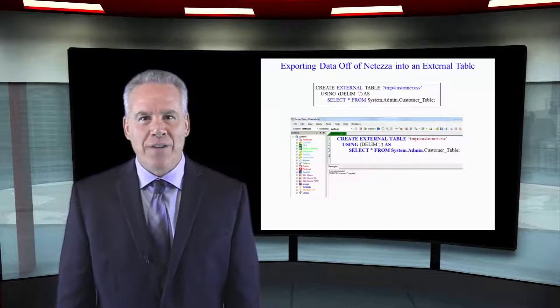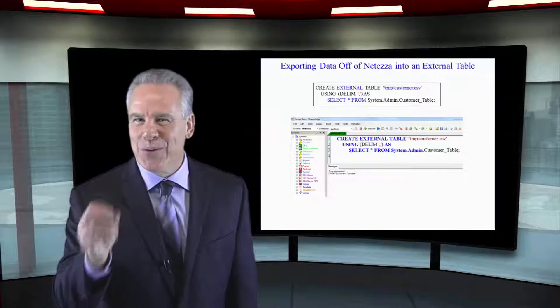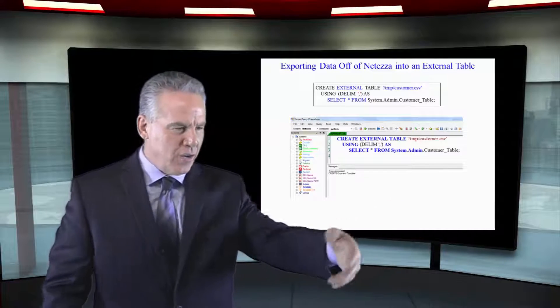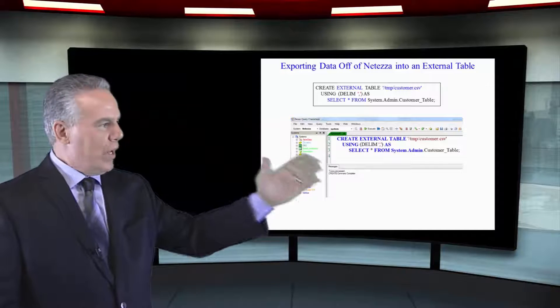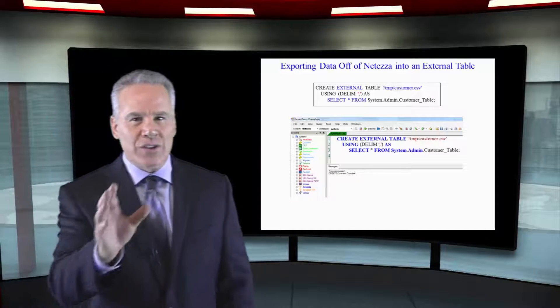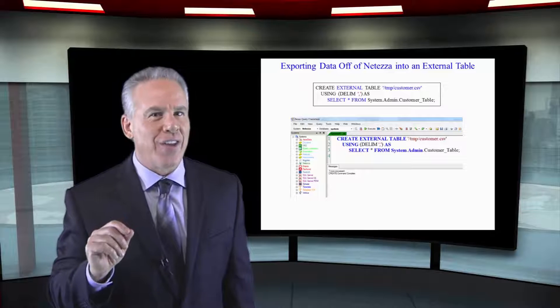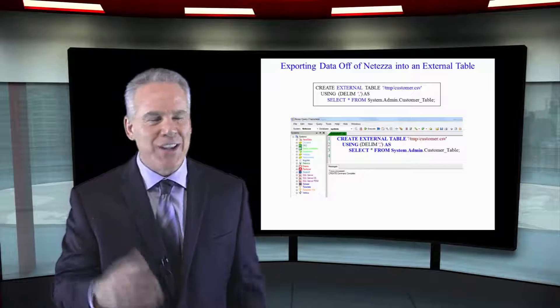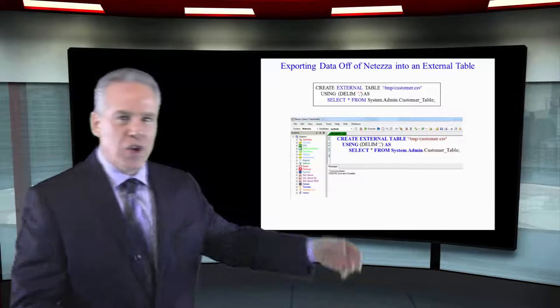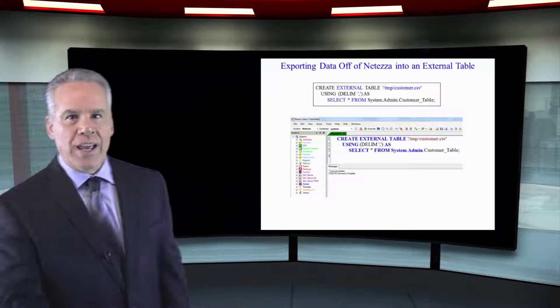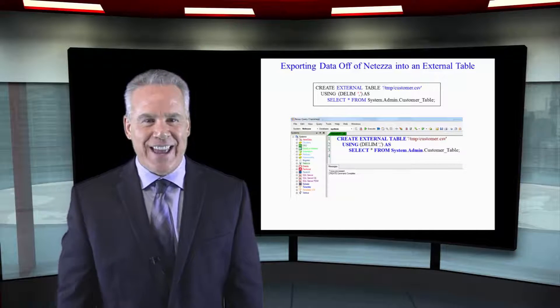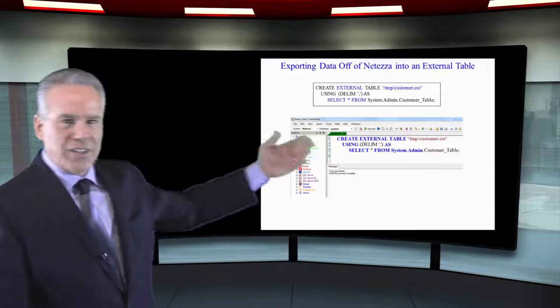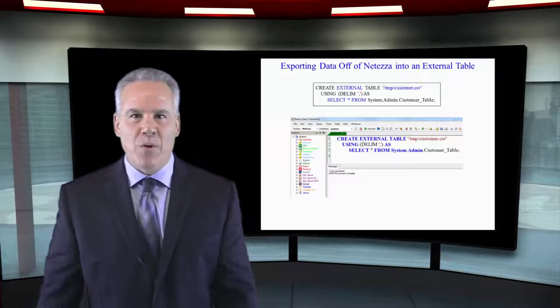We're going to export data off of Netezza into an external table. And here you can see create external table. We give it the path name. This is going to be stored most likely on the host. That's Linux, so that's why you see the path. Using delimiter, we're using a comma in this case. And then we can select everything from our table. Done.